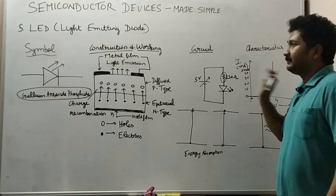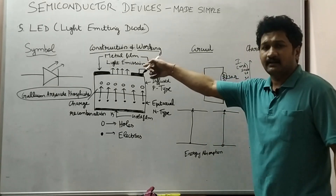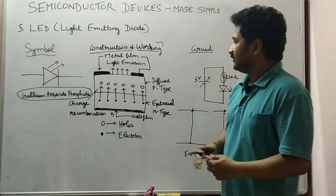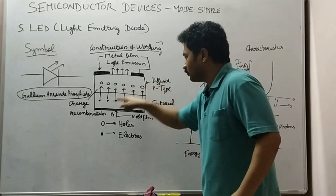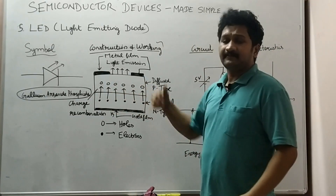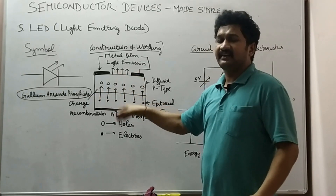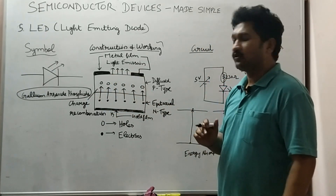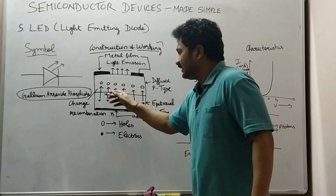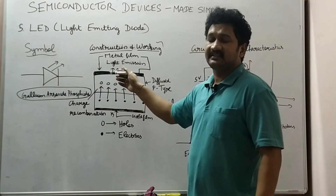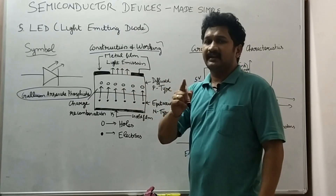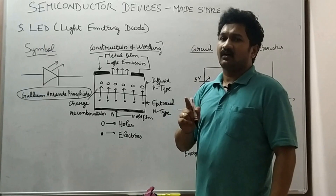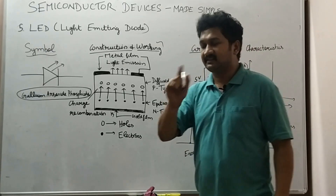Once again, explaining the construction and working: when the light emitting diode is forward biased, it works in forward biased mode. Holes and electrons are present, and charge recombination takes place — electrons and holes recombine with each other.